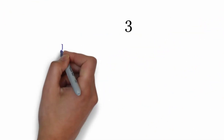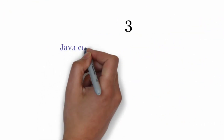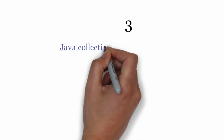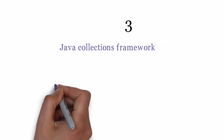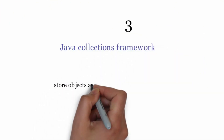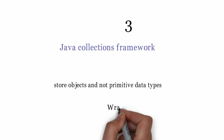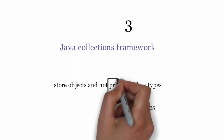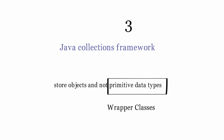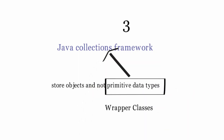Third reason is: wrapper classes are used in the Java collection framework. Java collections can only store objects and not primitive data types. Hence, we need to use wrapper classes to store primitive data types in a collection.